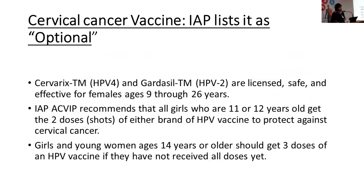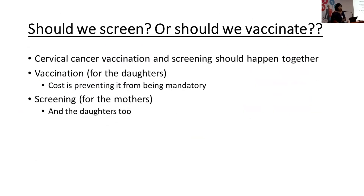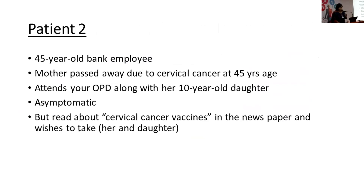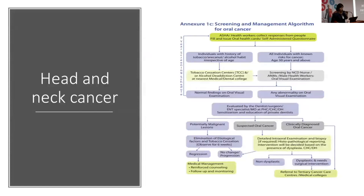The HPV vaccine is listed in India as optional. Both available vaccines are effective. The IAP recommends girls aged 11 or 12 receive two doses of either brand; older girls receive three doses. At a gynaecological oncology conference last week, there was debate on whether the government should invest in screening or vaccination — the answer is both are required simultaneously. Vaccination is for daughters, screening is for mothers, and vaccinated patients will still need to be screened.